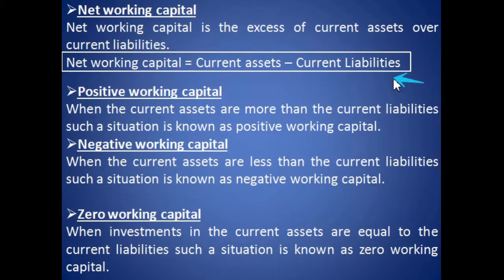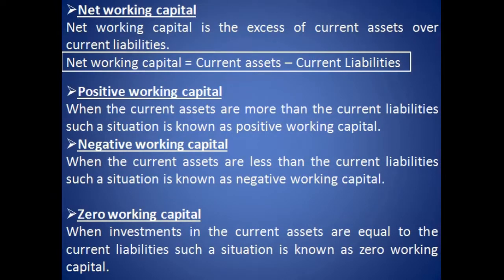The next term is net working capital. Net working capital is the excess of current assets over current liabilities, so the formula is: net working capital = current assets minus current liabilities. Next is positive working capital — when total current assets are more than current liabilities. Against this, we have negative working capital — when the value of current liabilities is more than current assets.